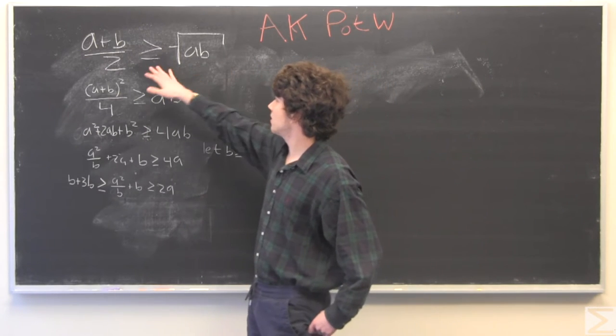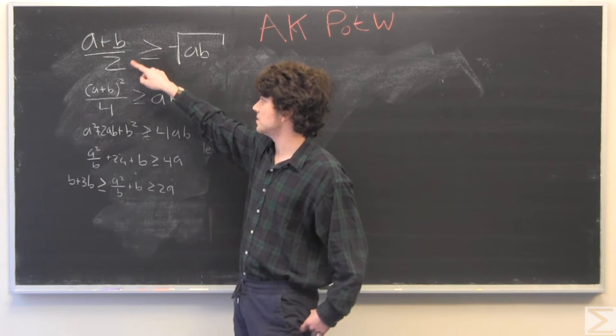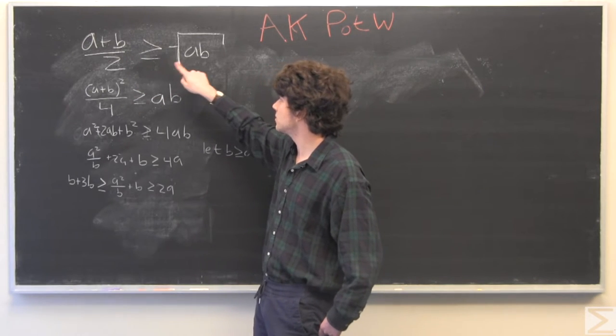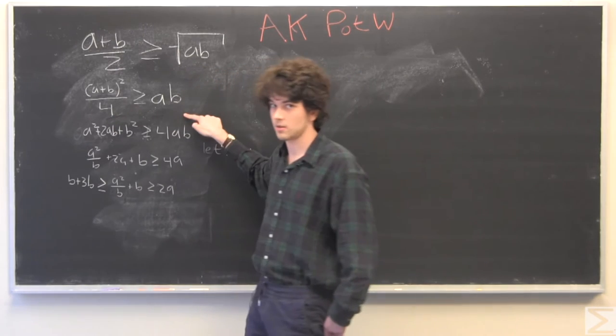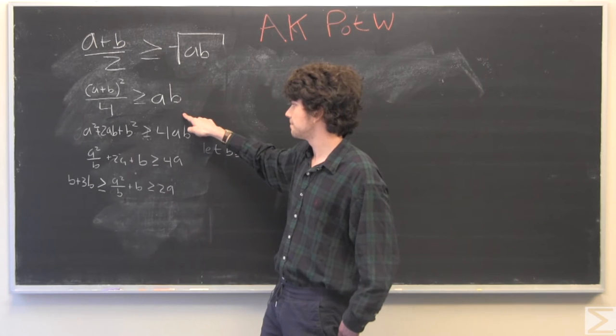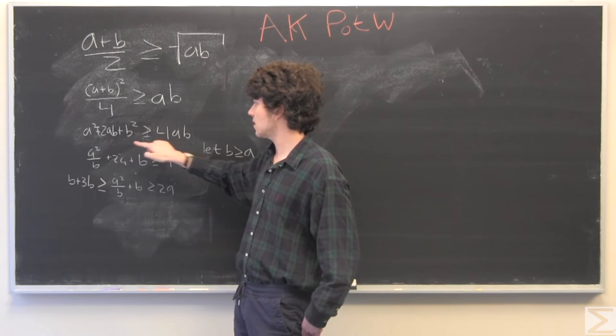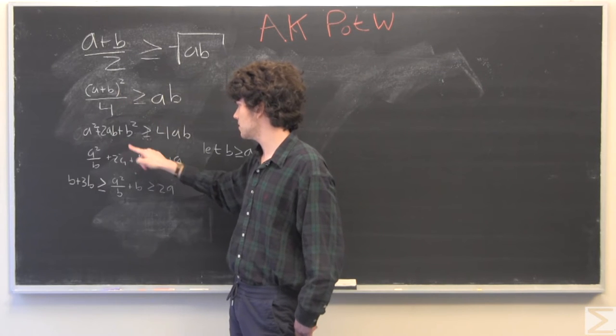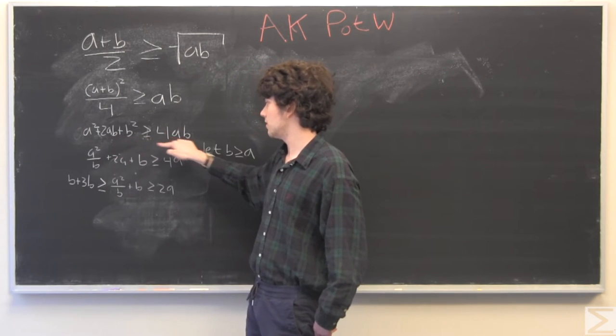So here we have our inequality for two terms. a plus b divided by 2 is greater than or equal to the square root of a times b. We're going to square both sides to get this inequality, and then multiply by 4 on both sides and expand this term out to get a squared plus 2ab plus b squared is greater than 4ab.